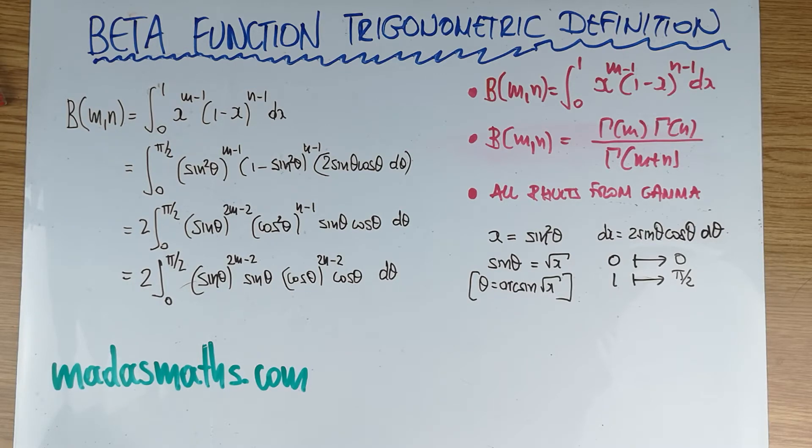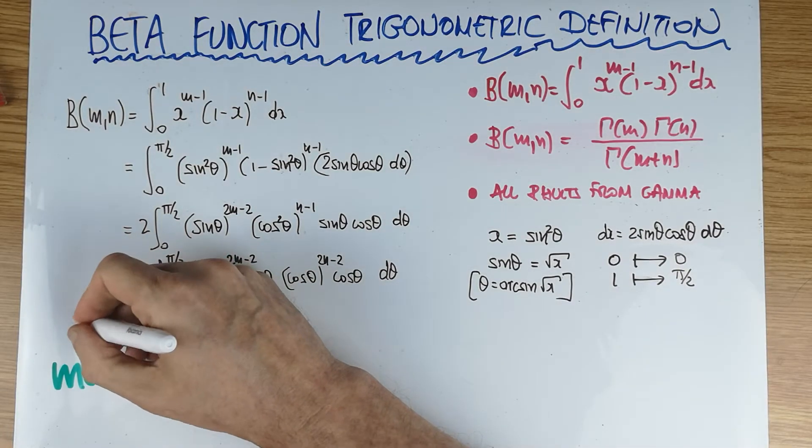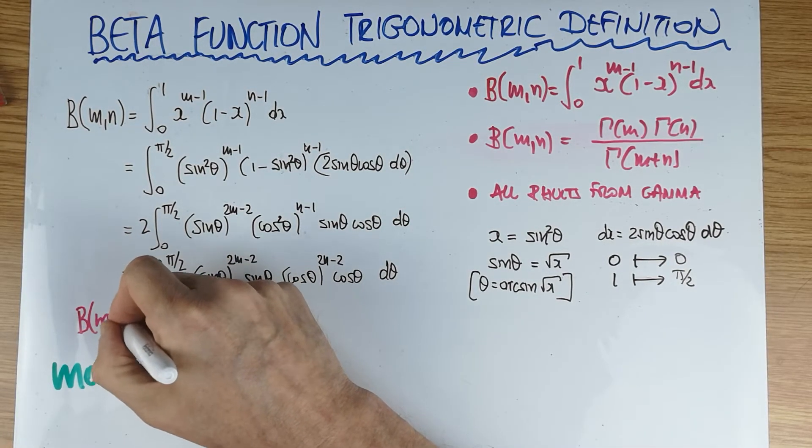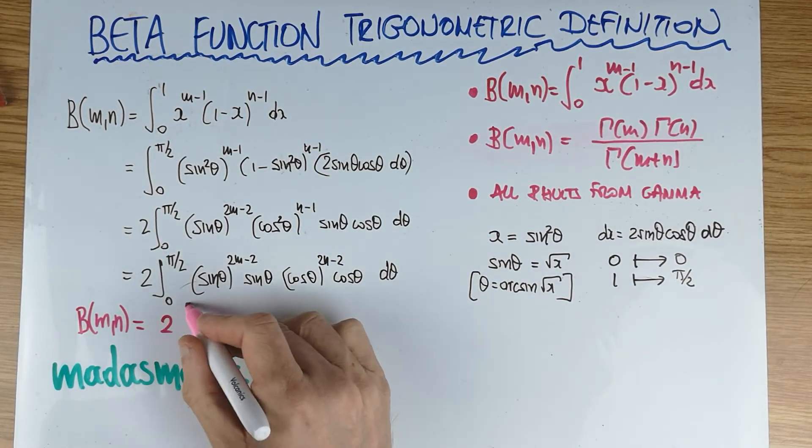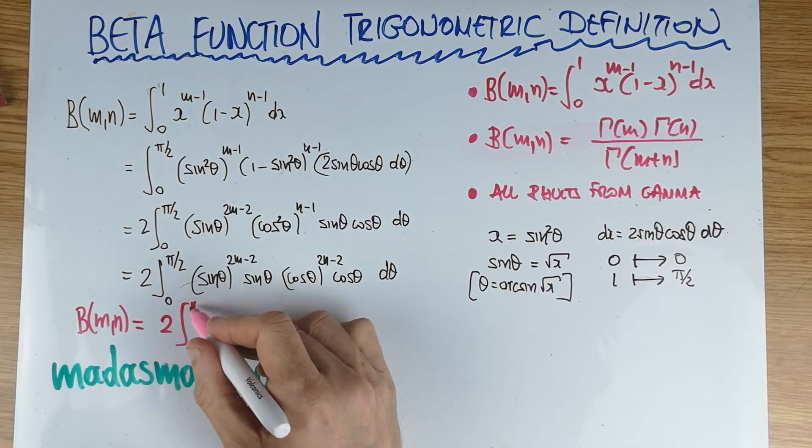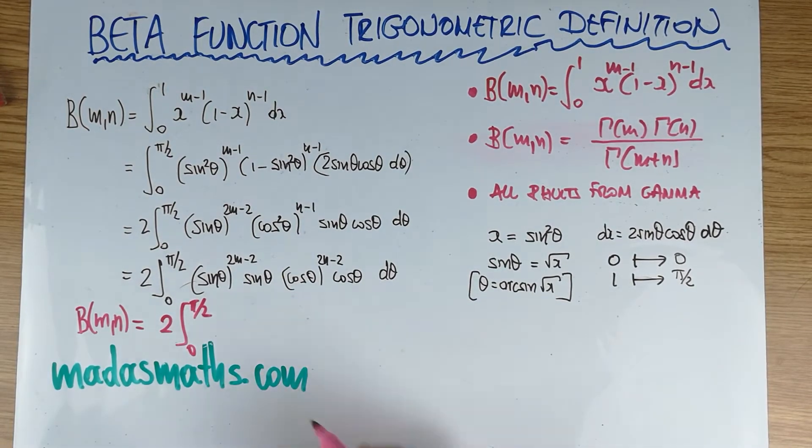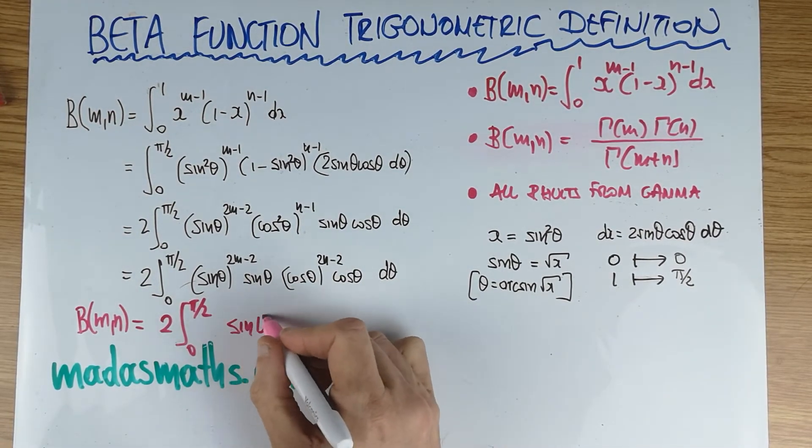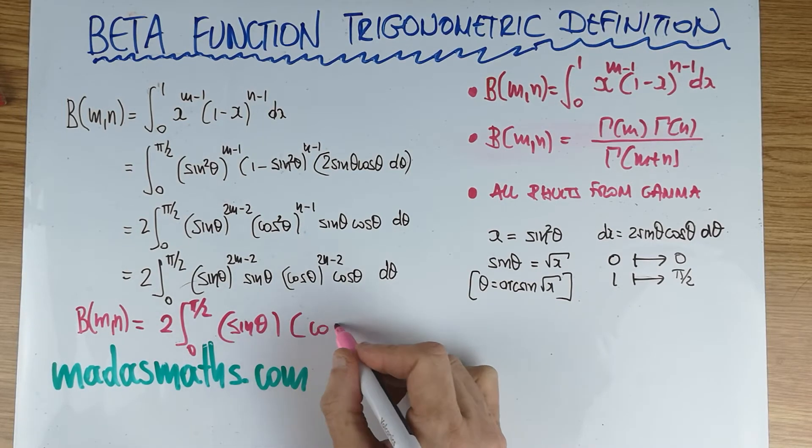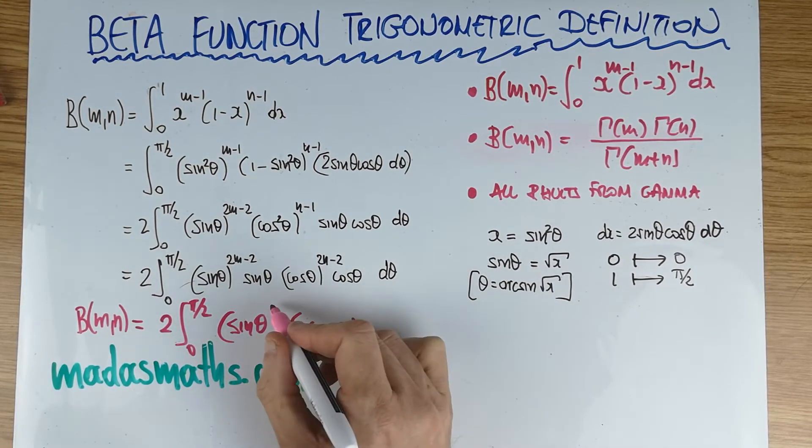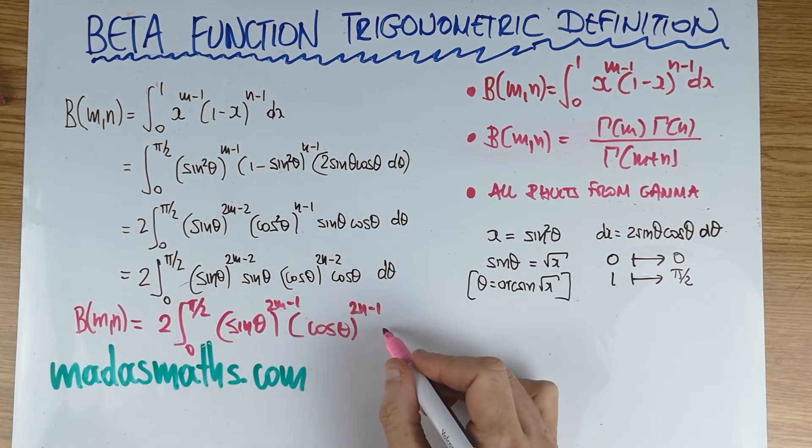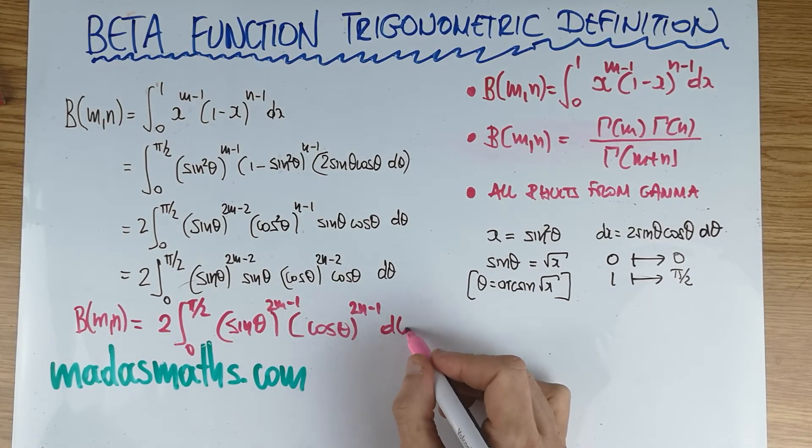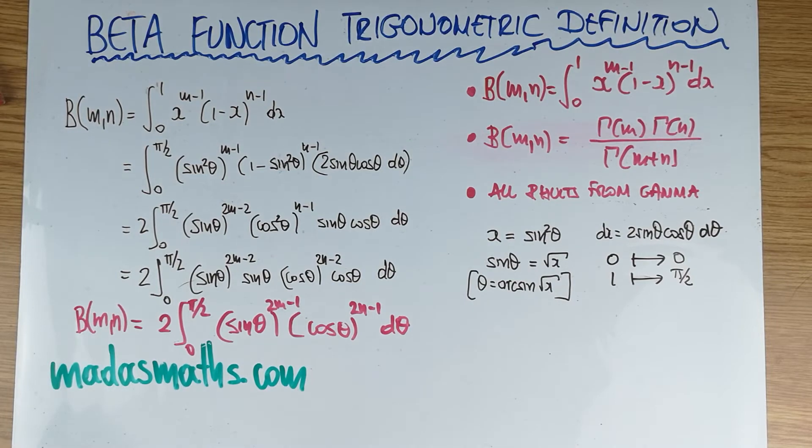And we have our result. I'm going to write it in pink, so the beta of m and n is 2 times the integral from 0 to pi over 2, sine to the 2m minus 1, cosine to the 2n minus 1 d theta. Very important result.